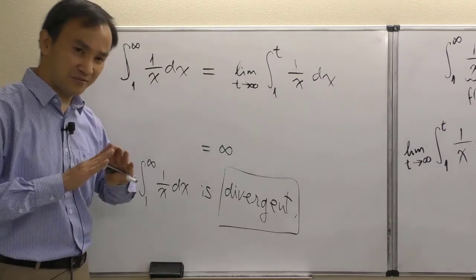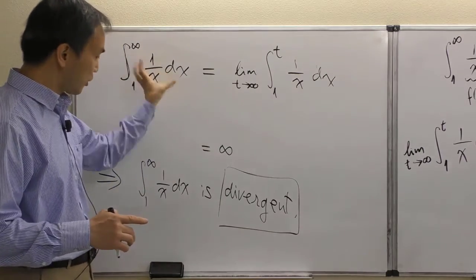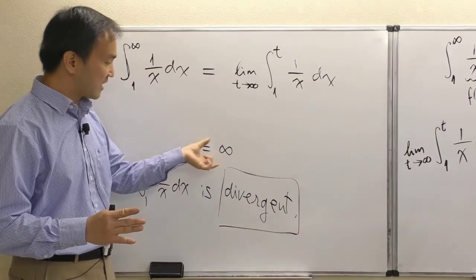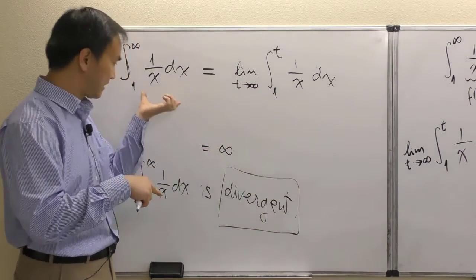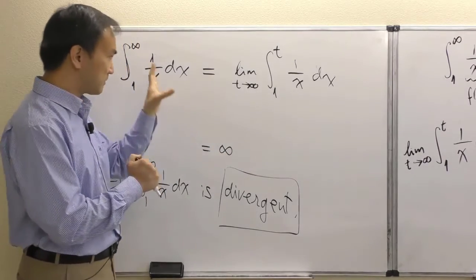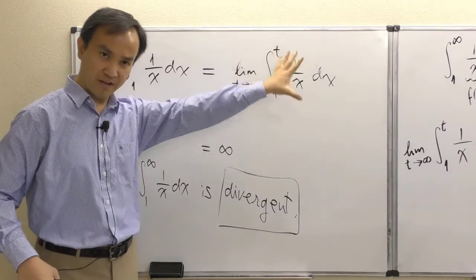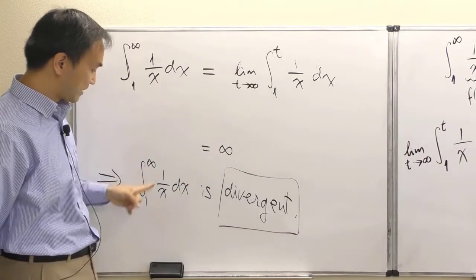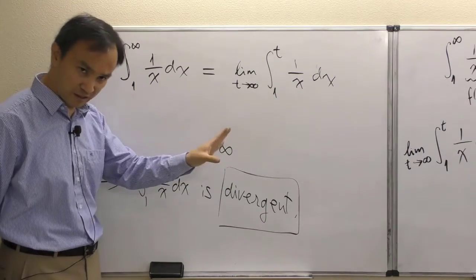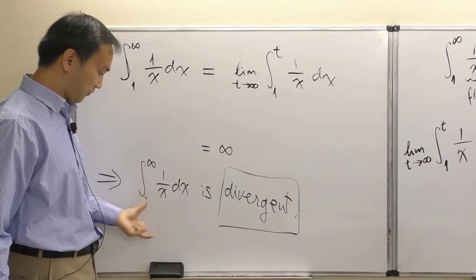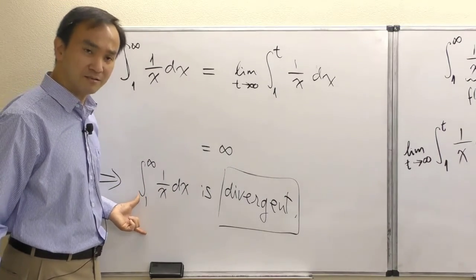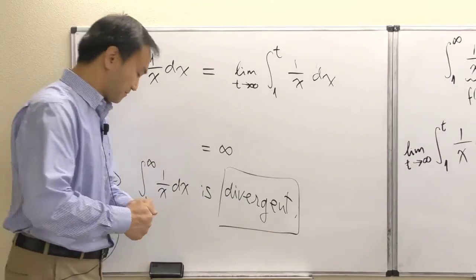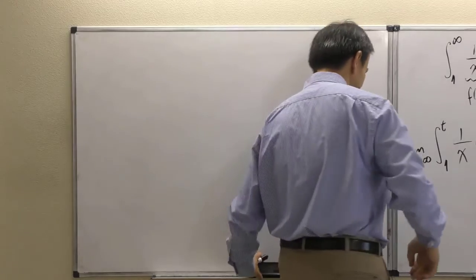I really hesitate to say 'this integral equals infinity' because infinity is not really a value. The better logic is: we treated the problem as a limit problem, and that limit turned into this result. In any case, this problem's answer is a divergent integral — a divergent improper integral.